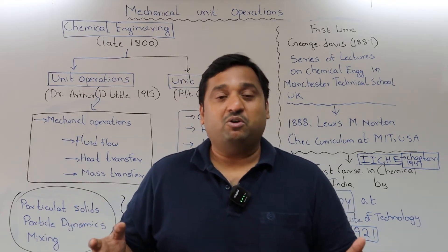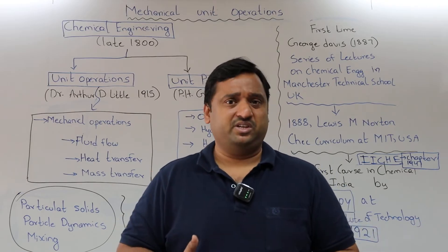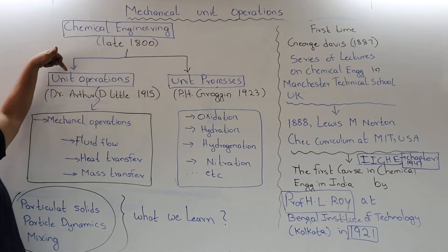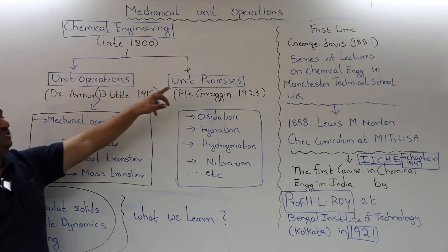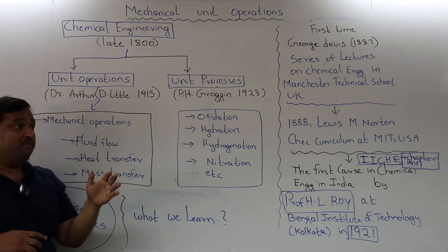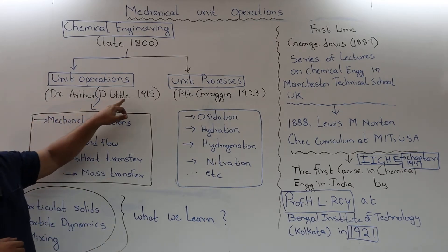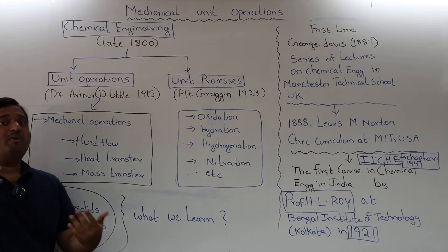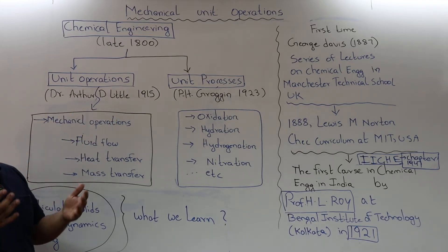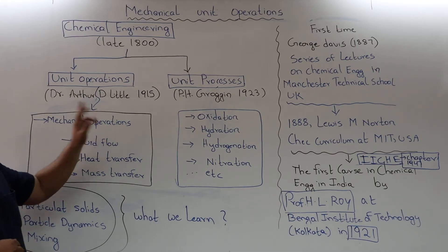Since we are dealing with the subject of unit operations, let us go a bit deeper into the basic aspects. Chemical engineering is divided into unit operations and unit processes. The person who coined the term 'unit operations' is Dr. Arthur D. Little in 1915. He came up with this classification and coined the term 'unit operations' in his book.